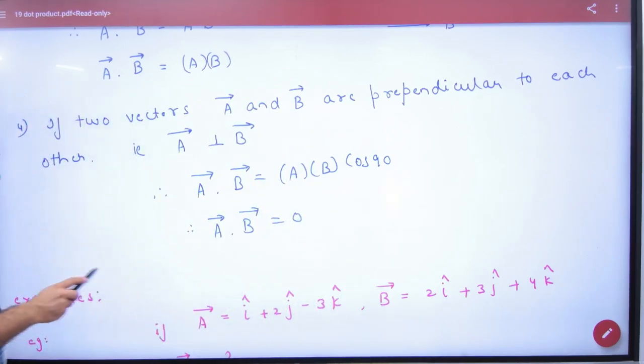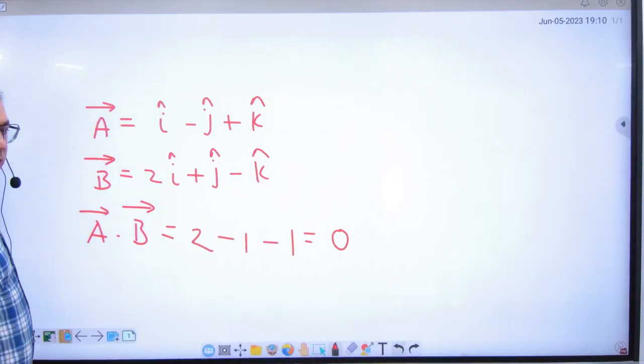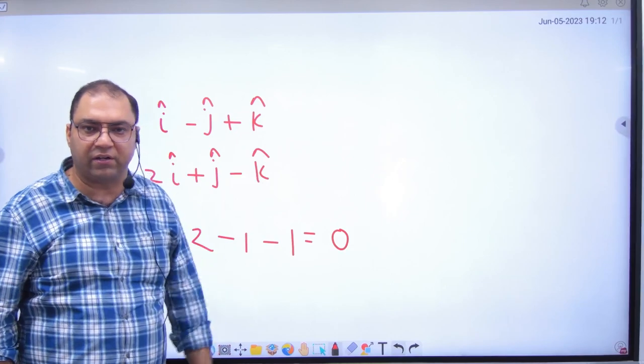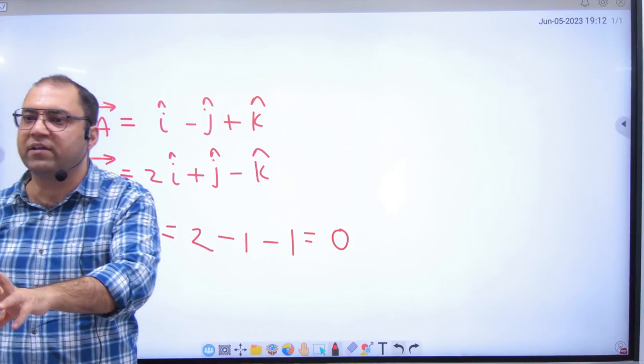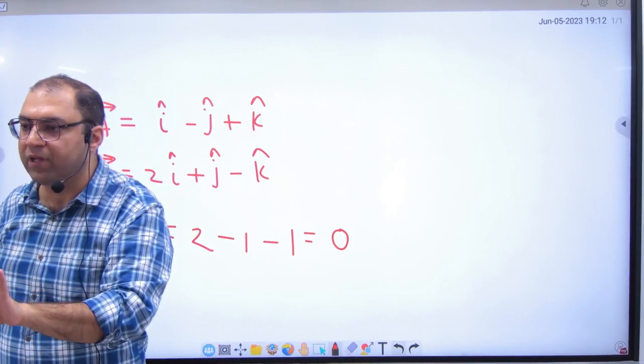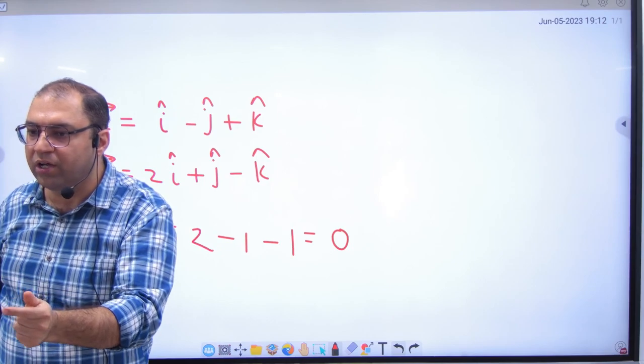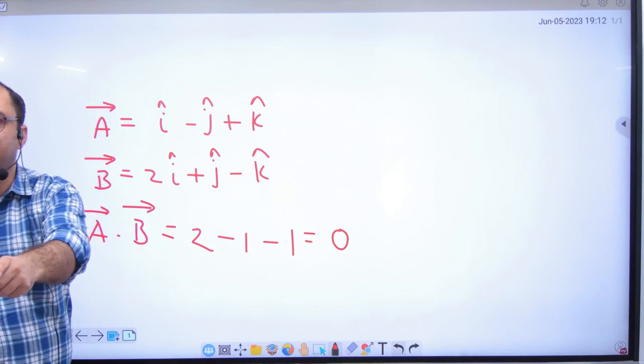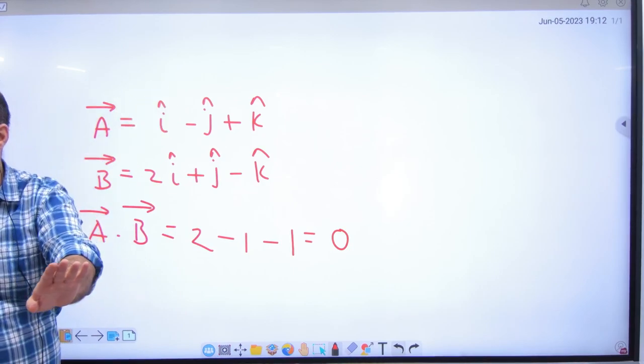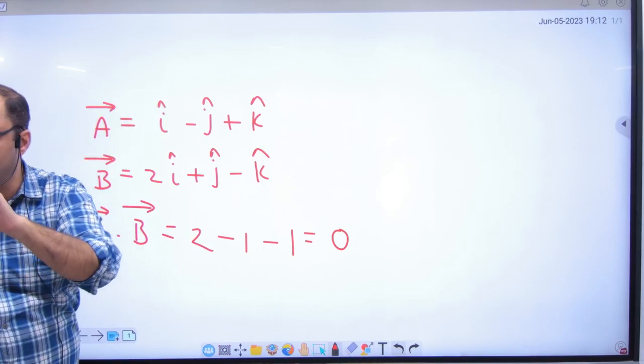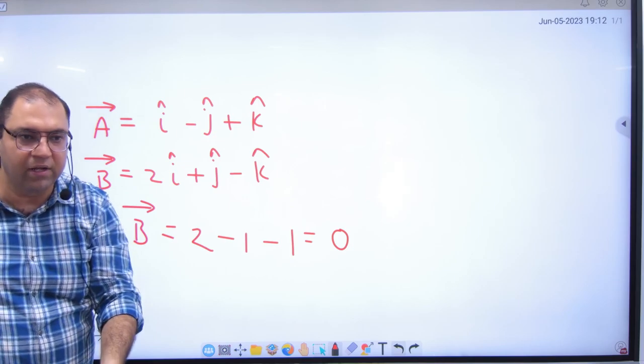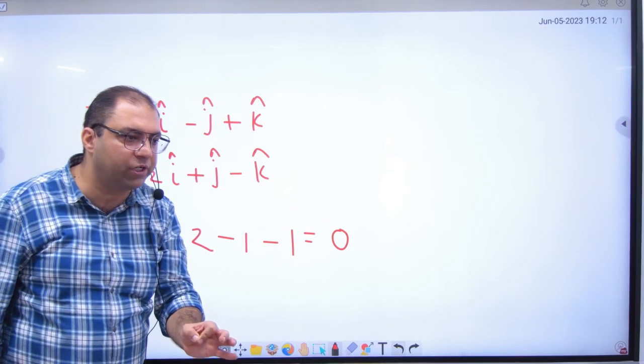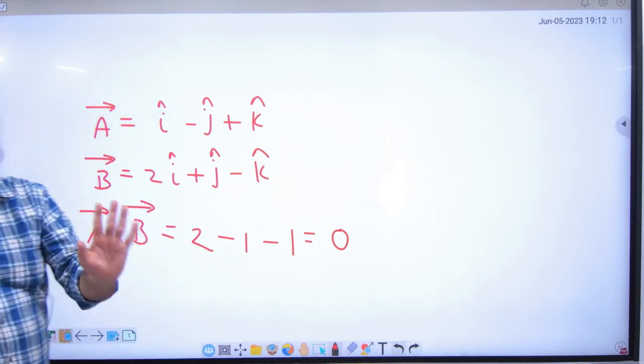So this is just 90 degrees. If you have a question given A vector, B vector, and they ask if these vectors are perpendicular or not, then what will be the dot product? Zero. So this means A vector is perpendicular to B vector. So remember, if the dot product is zero, then two vectors are perpendicular to each other. Clear?